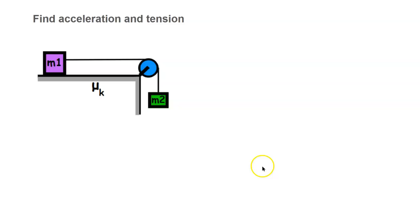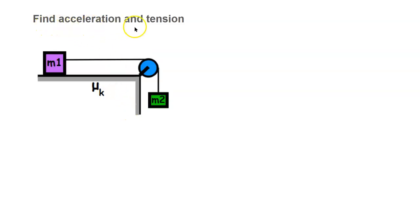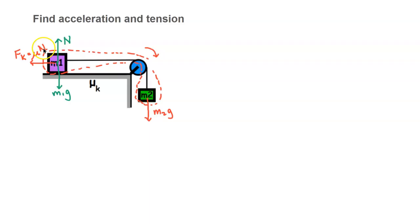Next, we're going to look at a modified Atwood's machine — a mass connected to a string along a pulley, with another mass hanging down. This is a frictionless problem, and we're looking for the acceleration and the tension in terms of the given variables. The first thing we want to do is draw the system boundary using a dotted line, and we're going to assume the pulley is massless.